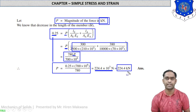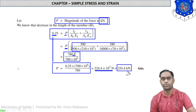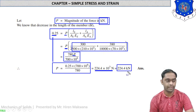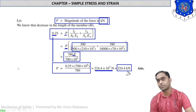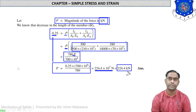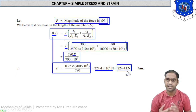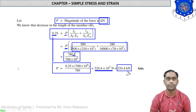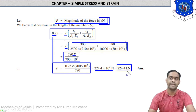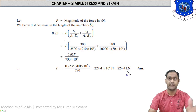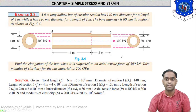So by this method you can find P. The difference between numerical 1 and numerical 2 is only that in the first problem P is given and we calculate δL, while in the second problem δL is given and we calculate the compressive force P. Let us now look at Example 3, which is very important.